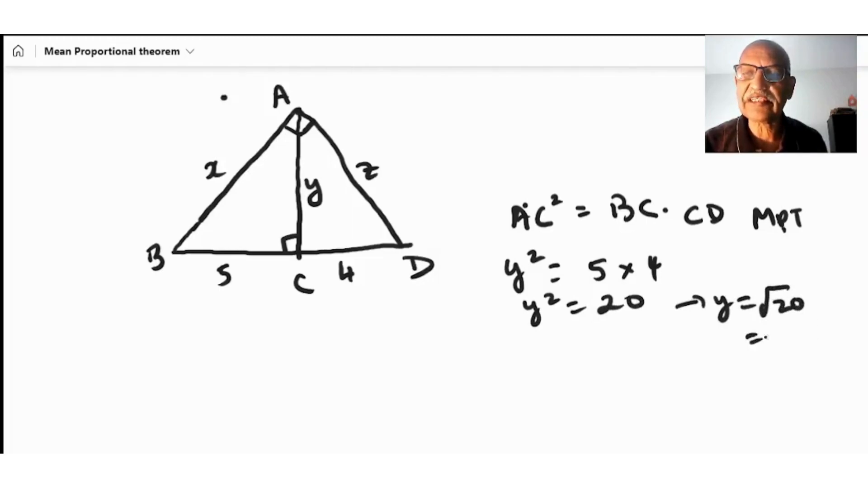So y equals square root of 20, or we can simplify that. Square root of 20 can be written as 4 times 5, so 2 square root of 5.